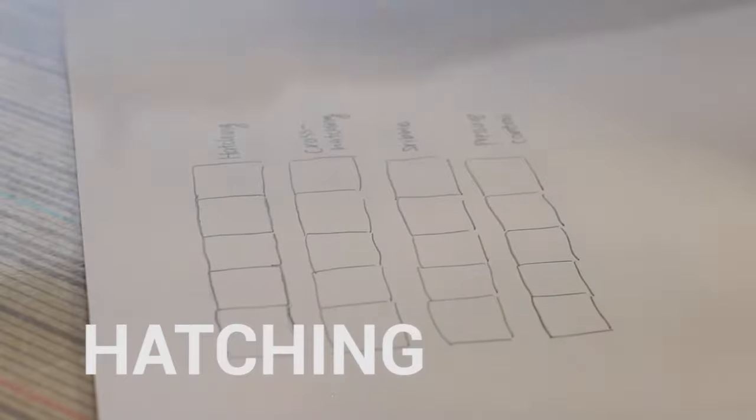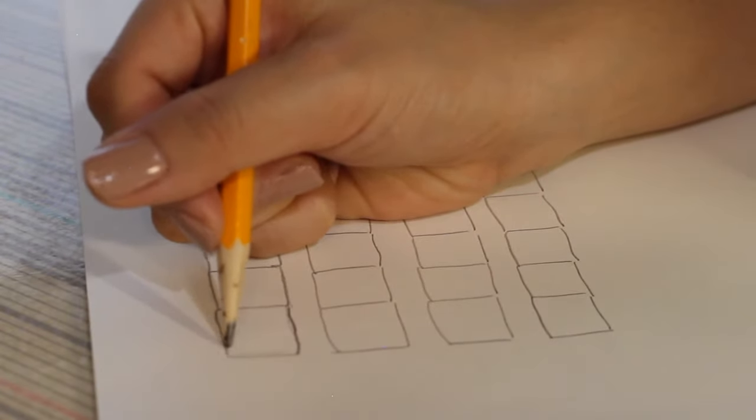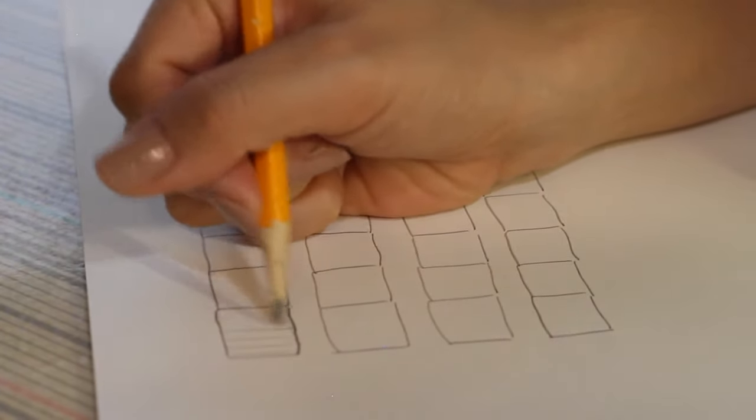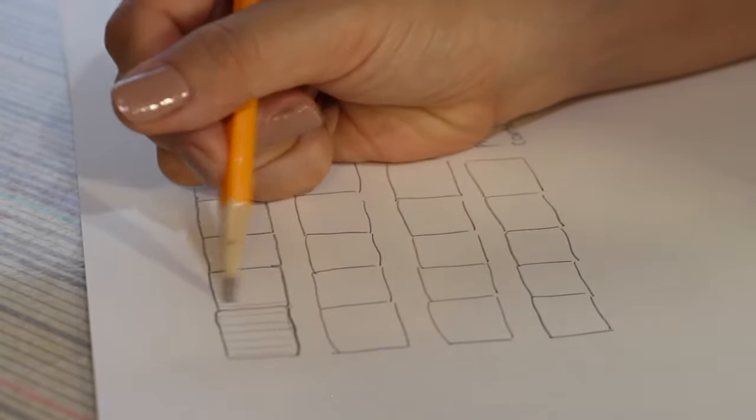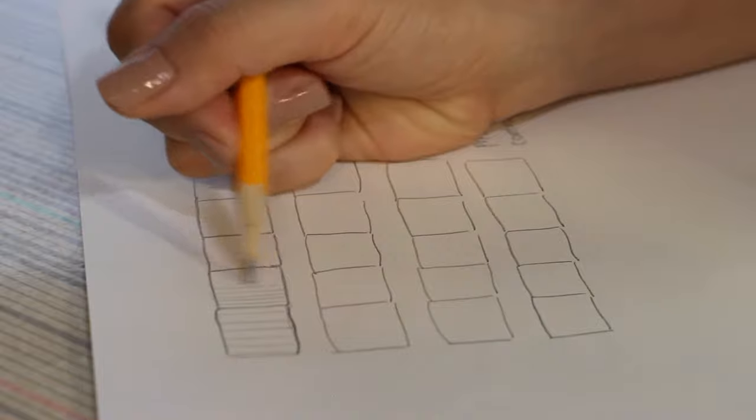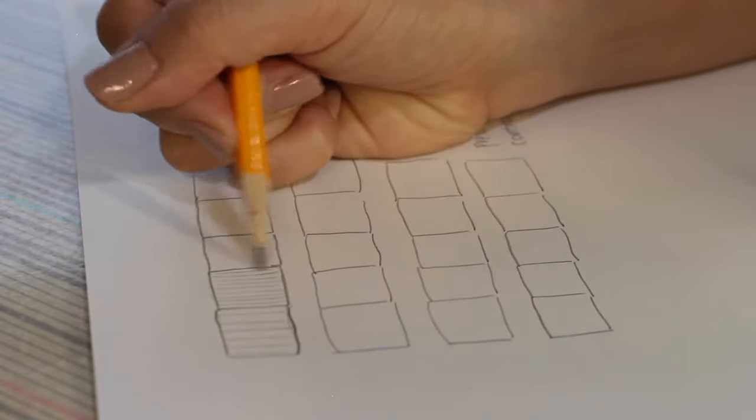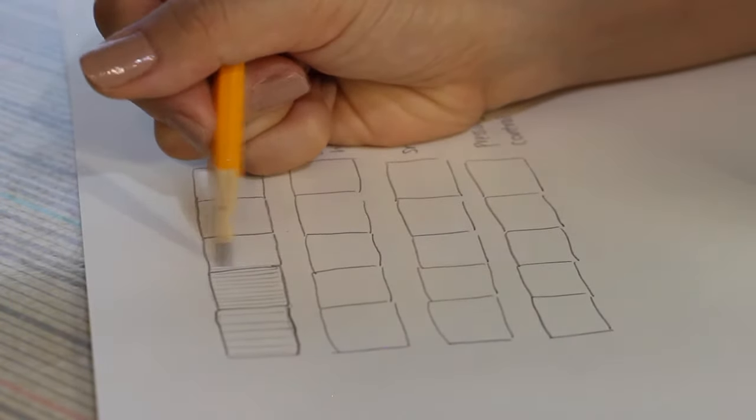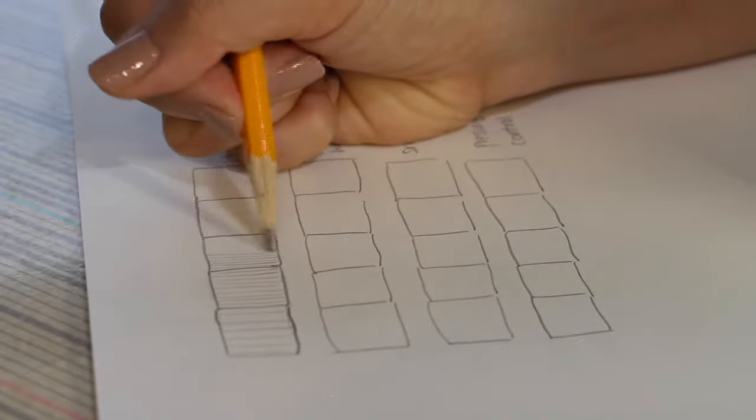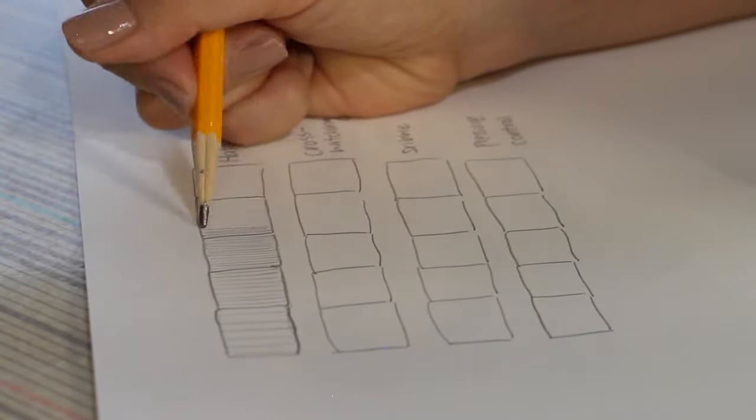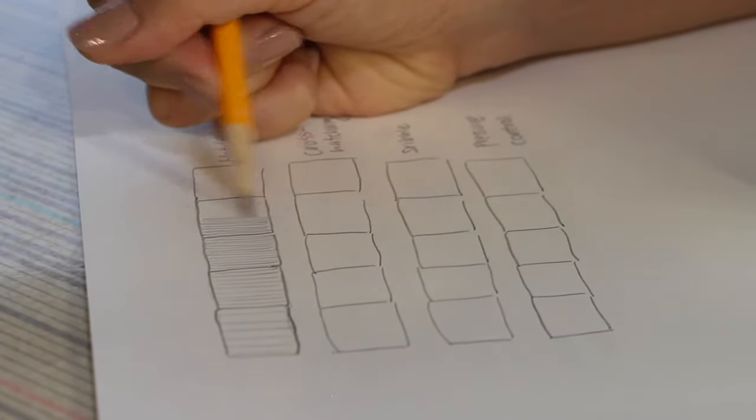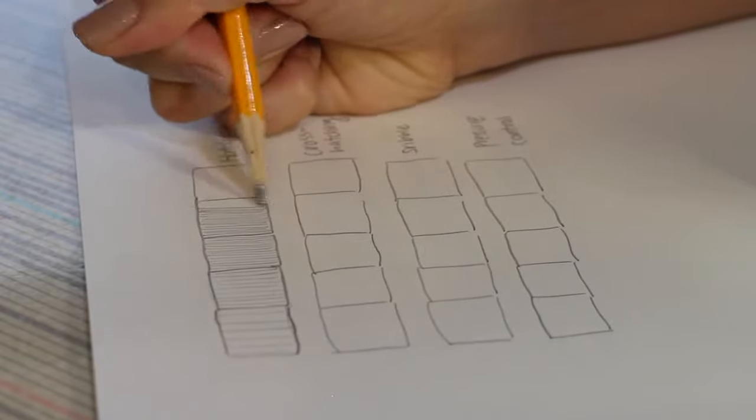Hatching: Fill the first box with a series of parallel lines with generous space in between. For the next box, do the same thing, but draw the lines a little closer to each other. Notice how I'm lifting my pencil up each time I draw a new line. It's important to always lift up your pencil for each line. Continue with this pattern until the lines start to overlap.